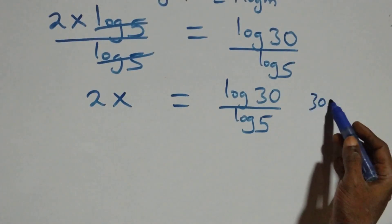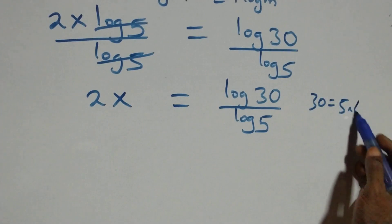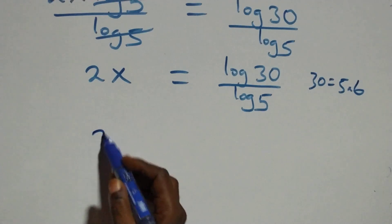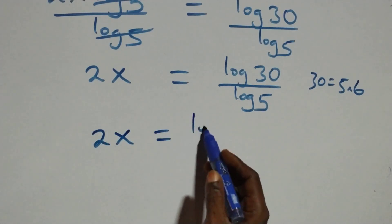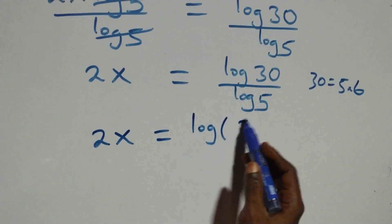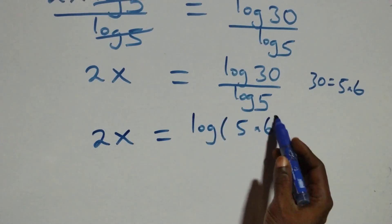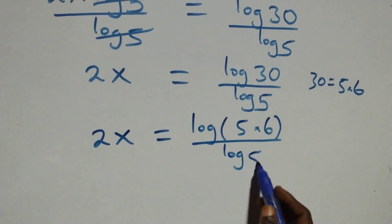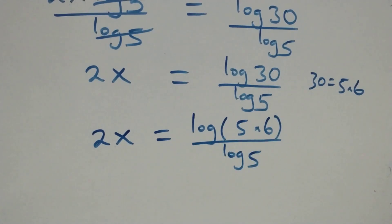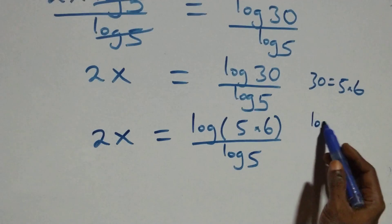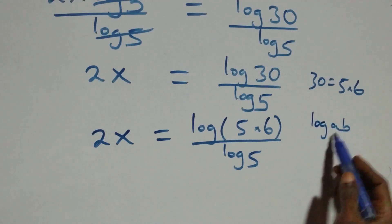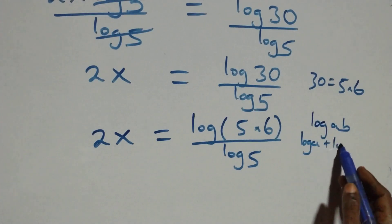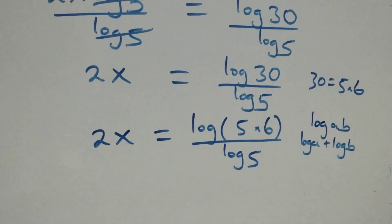The next step: we can write 30 as 5 times 6. So what we have becomes 2x equals to log of (5 times 6) over log 5. This is the same thing as log 5 plus log 6, by the logarithm product rule.